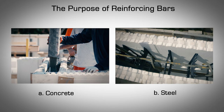The Purpose of Reinforcing Bars. Reinforced concrete structures are composed of two different materials: concrete and steel. Plain concrete is a strong material in compression — compressing a plain concrete cube or cylinder requires a relatively large amount of compressive force before reaching compression failure. However, plain concrete is relatively weak in tension; typically it can only carry one-tenth of its compression strength in tension.